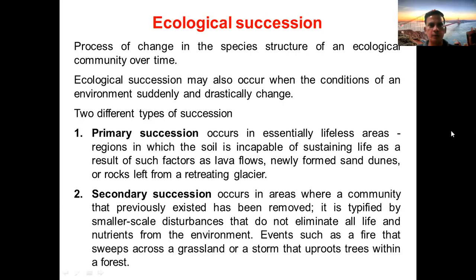In this lecture I will be talking about ecological succession. Ecological succession is the process of change in the species structure of an ecological community over time — this time is huge, spanning several hundred years. Ecological succession may also occur when the conditions of an environment suddenly and drastically change. It can take place in two kinds of areas: places where there is no life, and places where life has been devastated or completely wiped off.